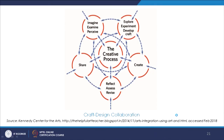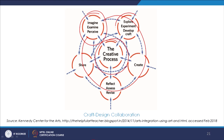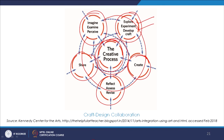Another creative process diagram is at the centre, aided by different sets of activities: imagination, examination, perceiving — all interconnected. At the other node the set of activities involves exploration, experimenting, developing the craft, then creation and co-creation, reflecting, assessing, revising, evaluating, modifying, sharing. All of these are interconnected and the central creative process is aided by all these sets of activities, which are connected to each other in some way and then work together as a system.